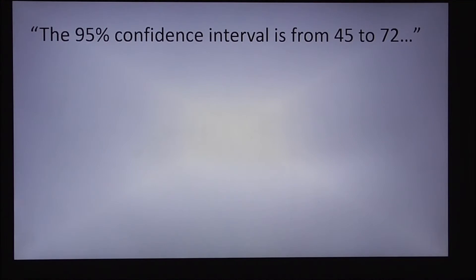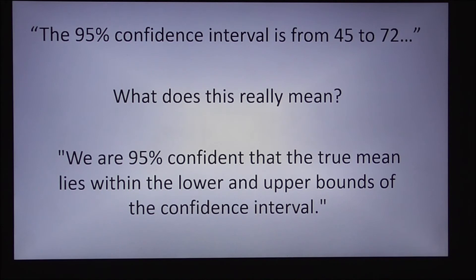So for example, if I were to come to you and say, hey, I've measured something and the 95% confidence interval is from 45 to 72, what does that actually mean? Well, here's what it means. We are 95% confident that the true mean of the population lies within the lower and upper bounds of the confidence interval. That's by definition.